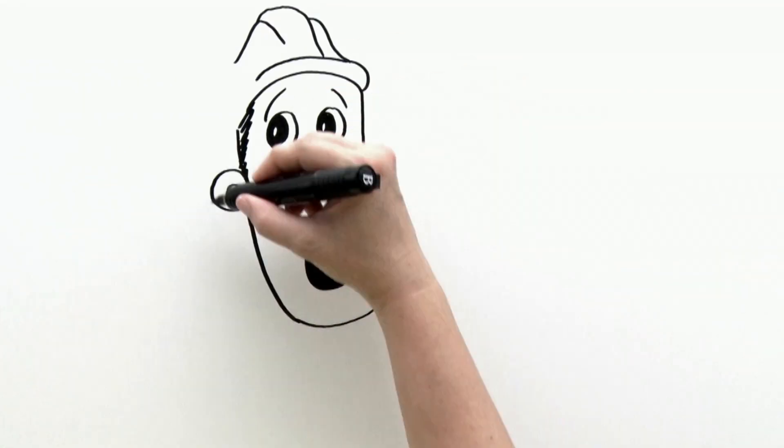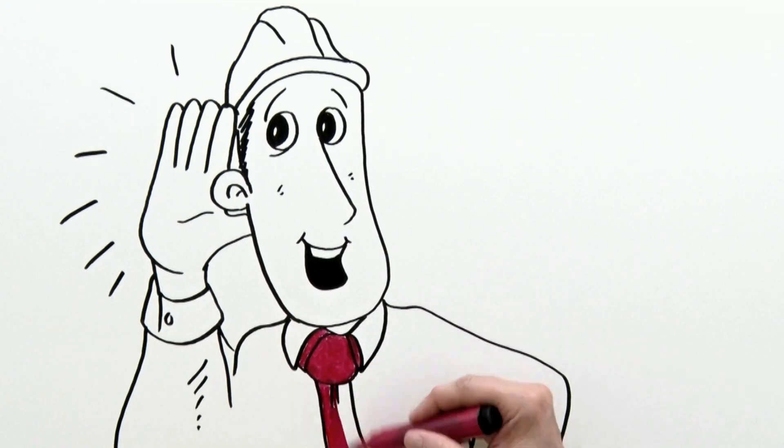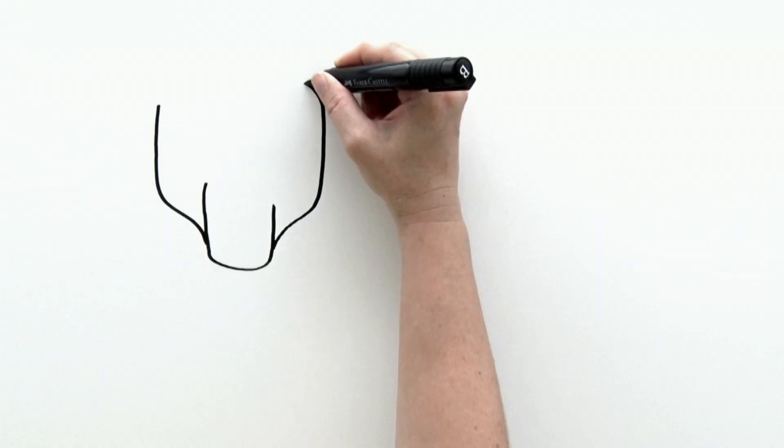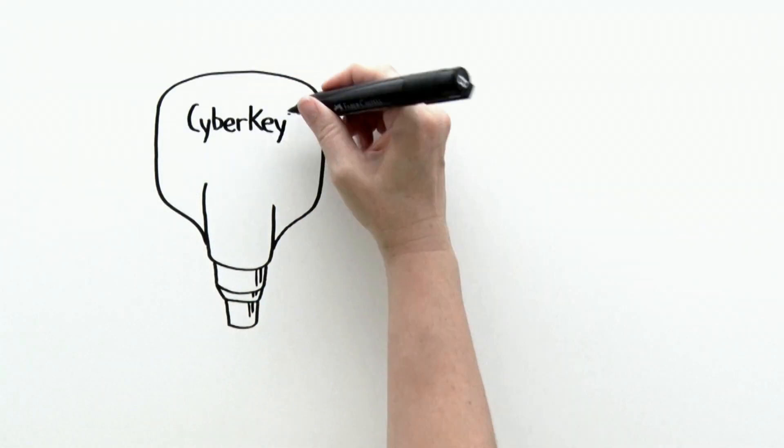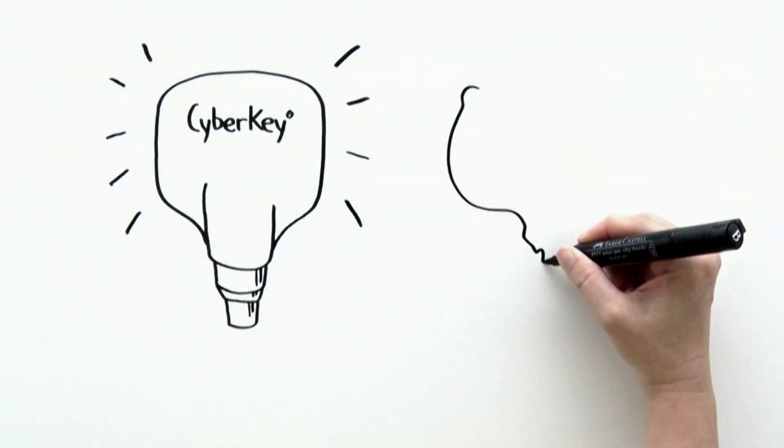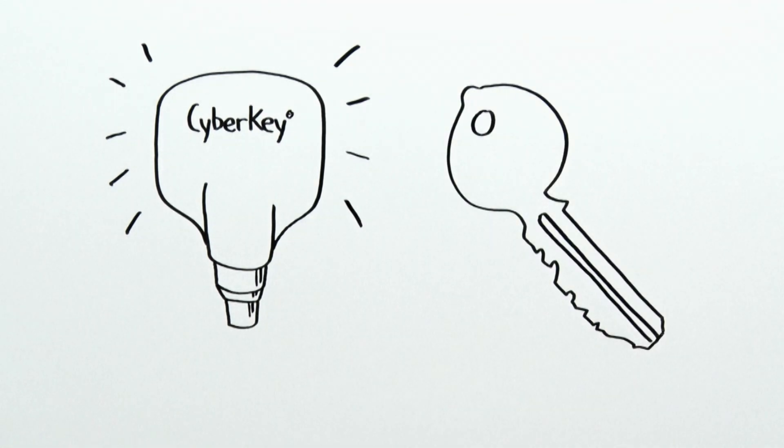But today, someone told Bob about the CyberLock security system. Bob was happy to learn that now he would only have to carry one key. And with the CyberLock software, he could disable any lost or stolen keys and never have to re-key again.